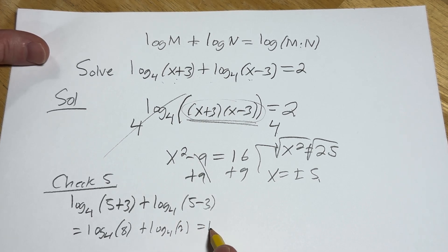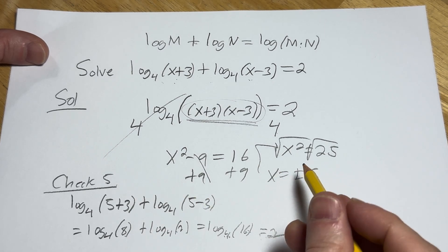Again, we use the product rule here. This is log base 4. 8 times 2 is 16. 4 to what power is 16? 2. 4 squared equals 16. Boom, it checks. 5 is one of our answers.